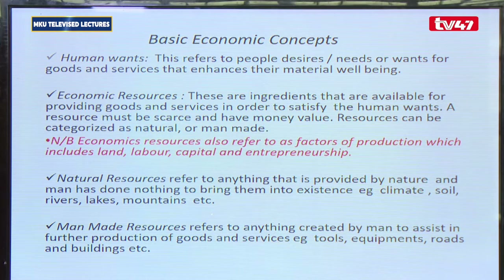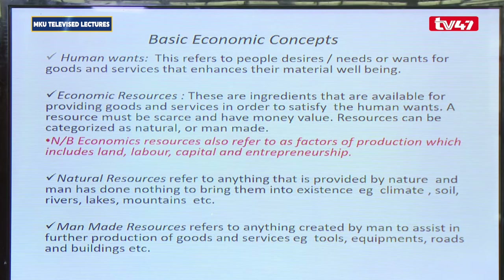Human wants refers to people's desires or needs that must be satisfied through the production of goods and services. We all want to satisfy our needs so that we feel okay and fulfill our well-being. The items we use to satisfy those needs we call economic resources. Economic resources are all ingredients that are available and are supposed to provide goods and services in order to satisfy human needs. Economic resources may also refer to the factors of production.